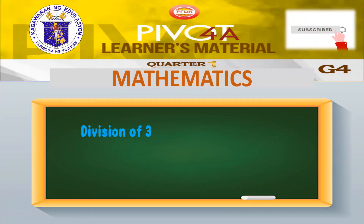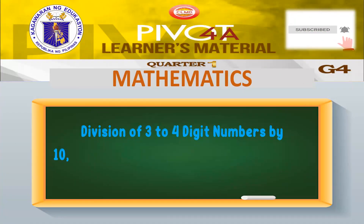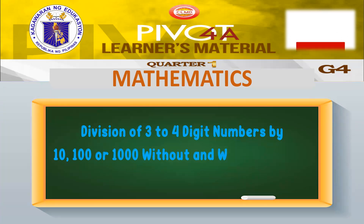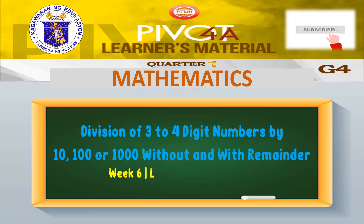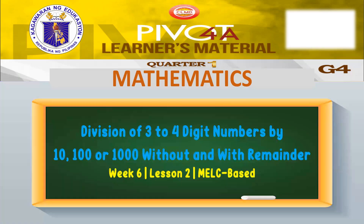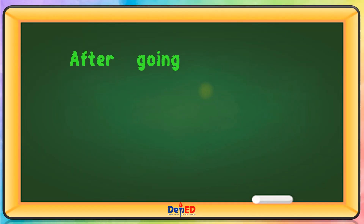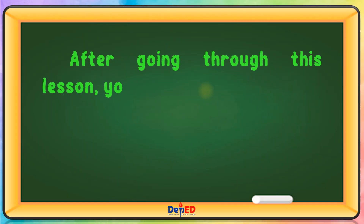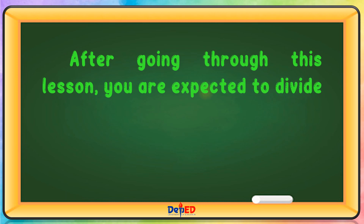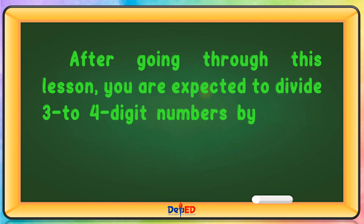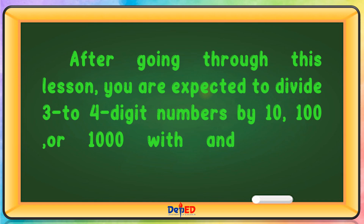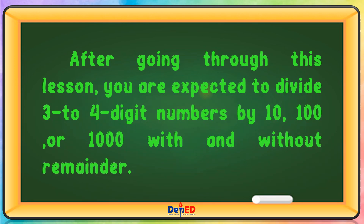Good day, everyone. Today, we will be discussing division of 3 to 4-digit numbers by 10, 100, or 1,000 without and with remainder. After going through this lesson, you are expected to divide 3 to 4-digit numbers by 10, 100, or 1,000 with and without remainder.